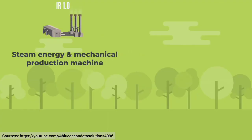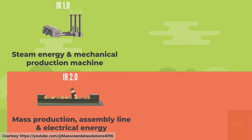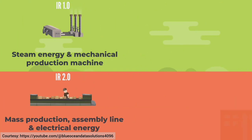It all starts with the first industrial revolution which happened in the late 1700s, where water and steam power fueled a lot of growth in agriculture and textile. About a hundred years later in the late 1800s, we had the second industrial revolution, driven by electrification and the advent of electricity, and more importantly the advent of modern mass manufacturing.